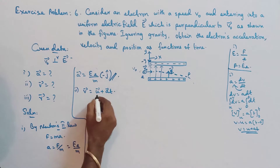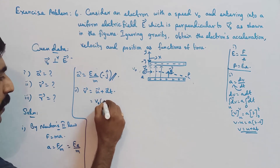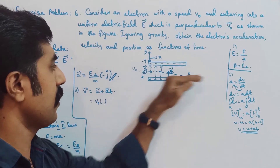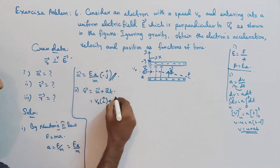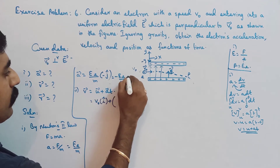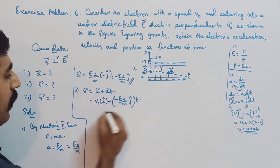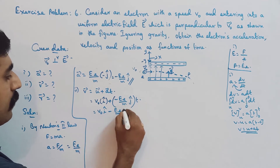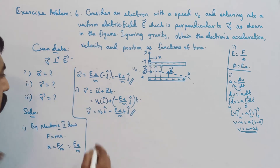Now substituting the values: initial velocity u equals V0 in the positive x-axis direction, that is V0 î cap. Plus acceleration A vector, which is minus eE/m ĵ cap, multiplied by time t. So the velocity vector equals V0 î cap minus (eE/m)t ĵ cap. This is the velocity of the electron.